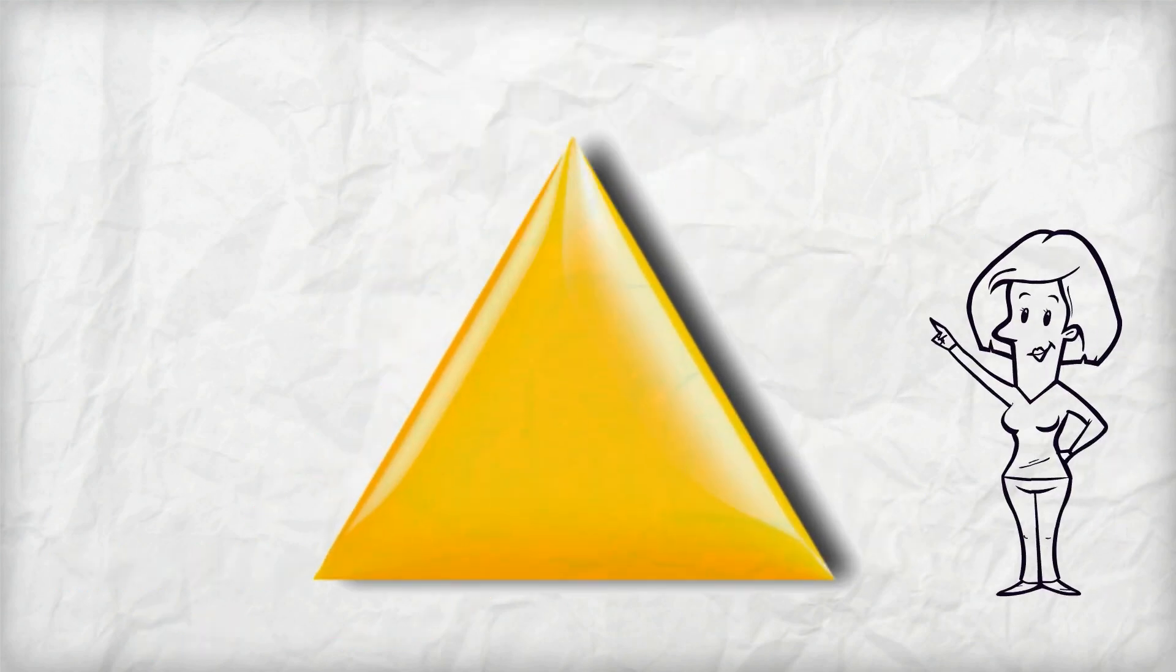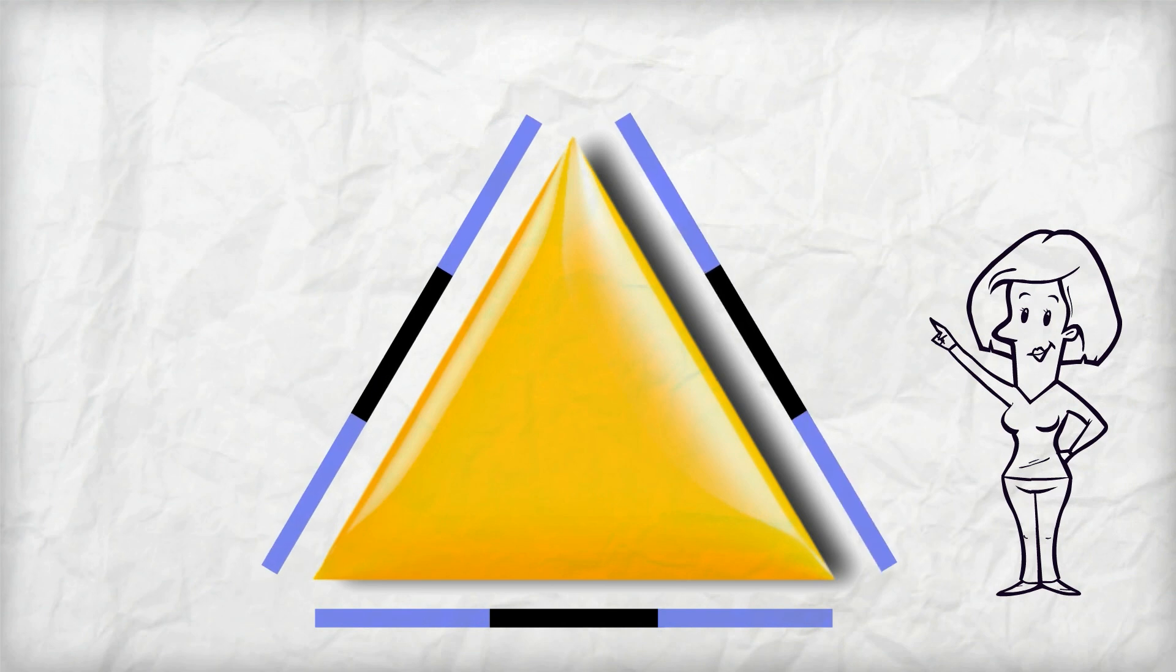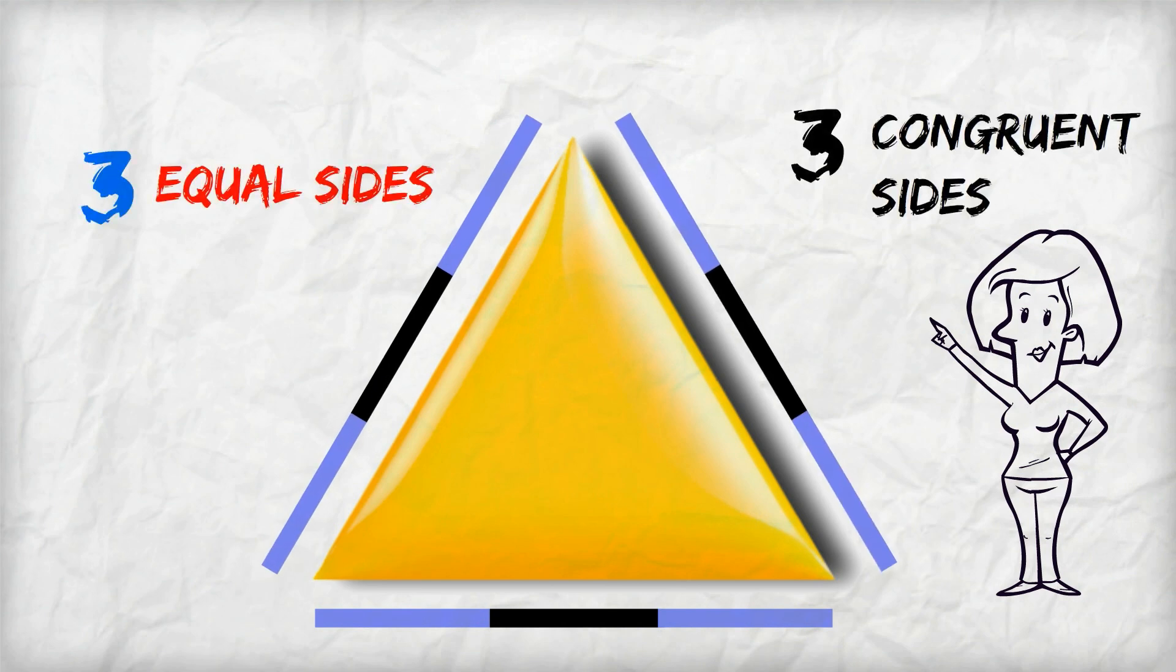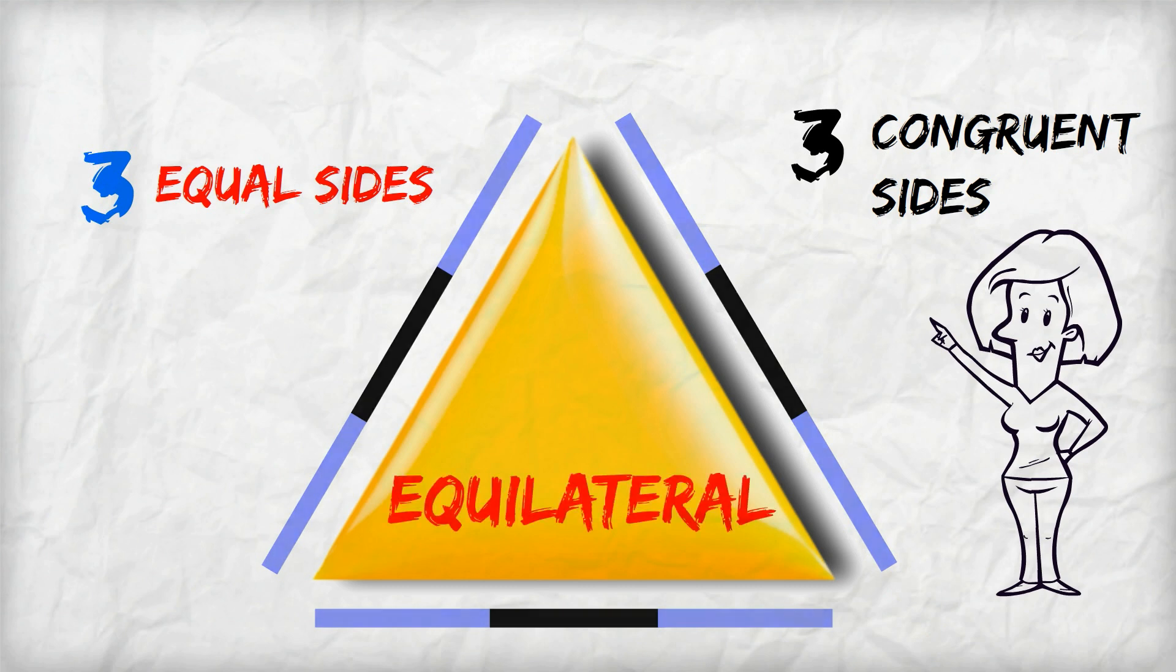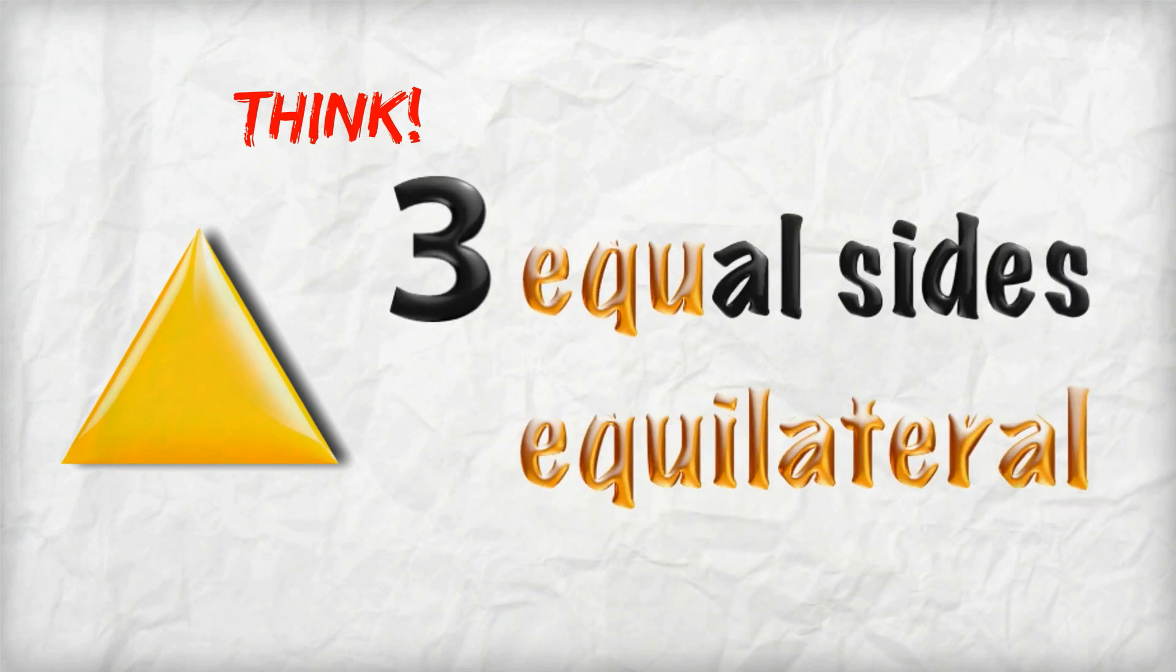Let's try it out on this triangle. The ruler shows it has three sides the same. Three equal sides, three congruent sides. In geometry we call this an equilateral triangle. Think to yourself: three equal sides, equilateral. Equal, equilateral.